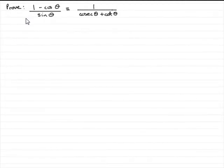Hi, in this tutorial what I want to show you is how to prove that (1 - cos θ)/sin θ is identical to 1/(cosec θ + cot θ).